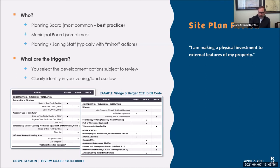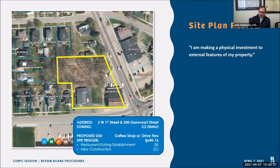Looking at a couple of examples: we're going to look at one site two different ways. Site plan review gets triggered when you're making a physical investment to the external features of your property. In this particular example, you've got a couple of parcels at the northwest quadrant of an intersection of two major streets. The applicant wants to convert the current use to a coffee shop with a drive-through — a Dunkin Donuts. According to this particular code, the applicant needs site plan review because they're a restaurant doing new construction — two site plan triggers on this property.